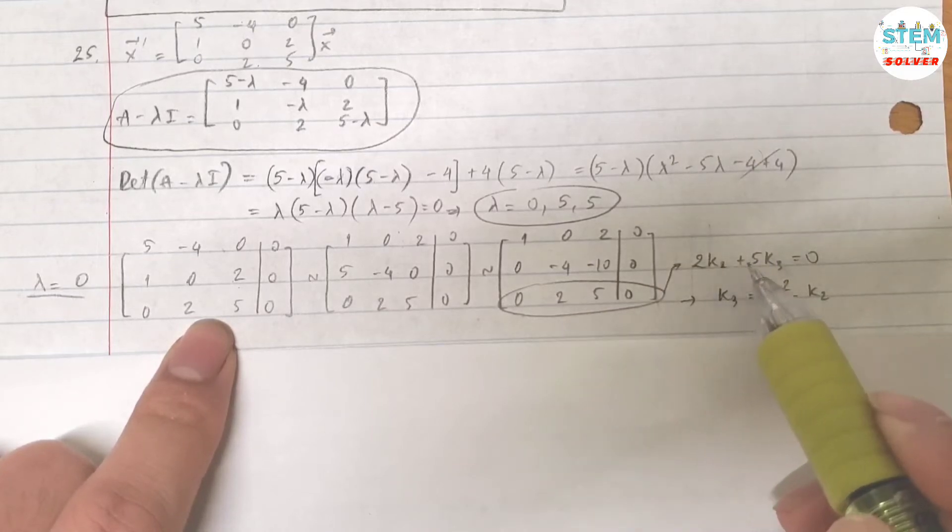So now for here, I have 2K2 plus 5K3 equals 0. So for K3, I got negative 2 fifths K2.